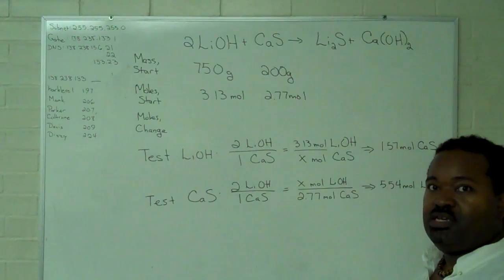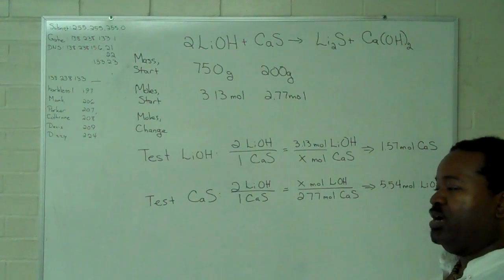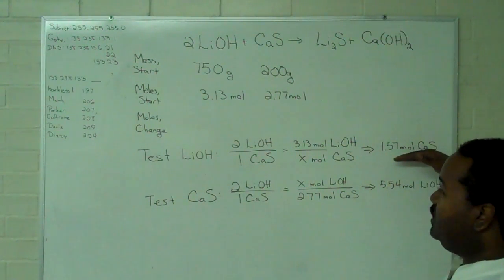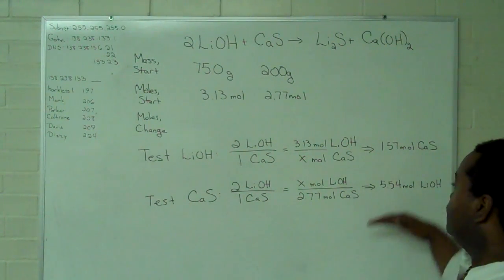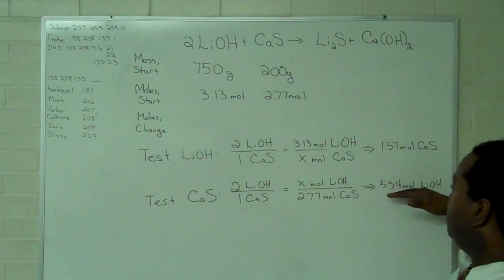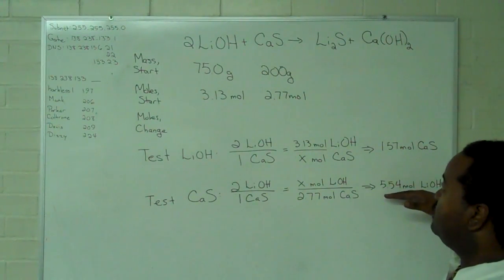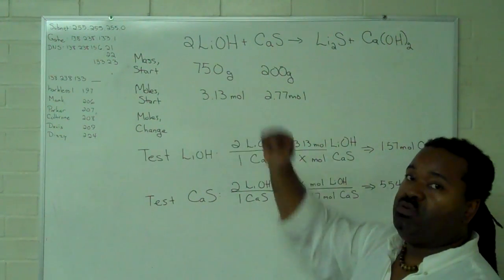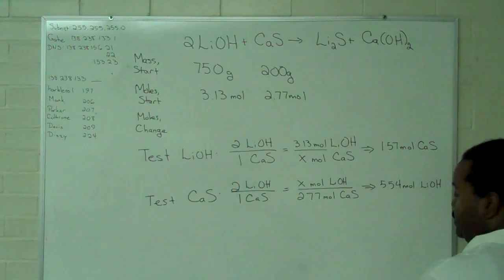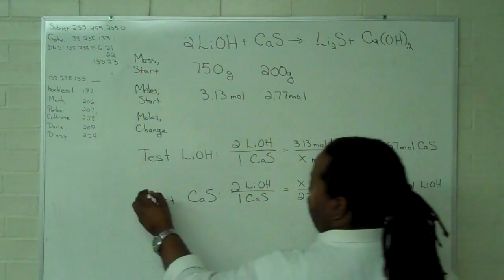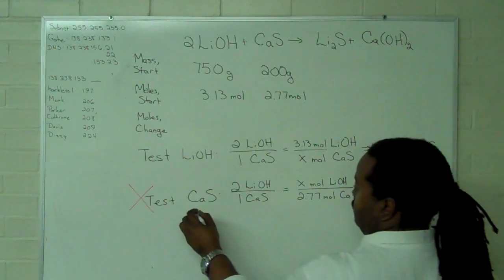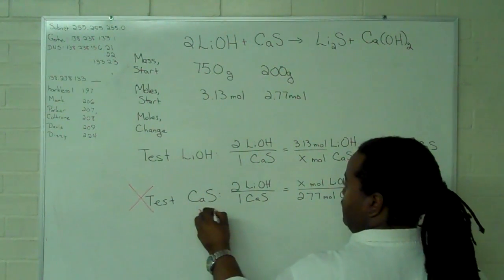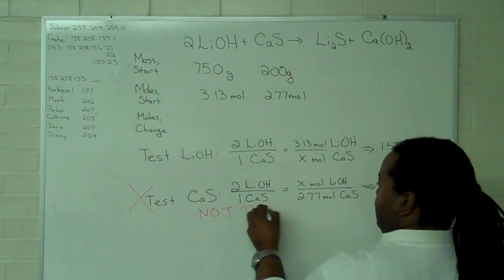So, this is the thinking step, because now we have to look at how much we need to use everything up and compare against what we have. 5.54 moles of lithium hydroxide is more than what we actually have. So, this test shows that calcium sulfide cannot be used up completely because this describes a situation that is not possible.